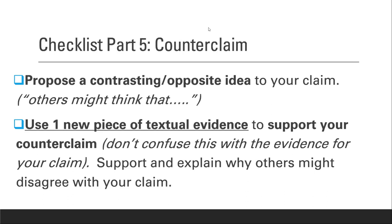And then, our favorite: the counterclaim. Once you've introduced your two pieces of evidence, supported them, explained them, and connected them to the claim, now you're going to tell me why somebody might disagree. You're going to say something like, 'one might think that it was not okay for the women to deceive others because...' Remember, you need one new piece of textual evidence to support your counterclaim. So you have two pieces of evidence to support your claim, and a third piece of evidence in your paragraph — but this third piece supports your counterclaim, not your claim. You still need to cite it correctly. In your paragraph, you'll have three total pieces of evidence: two to support your claim, one to support your counterclaim.